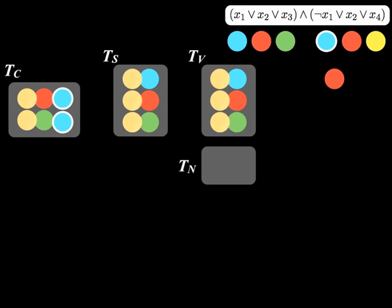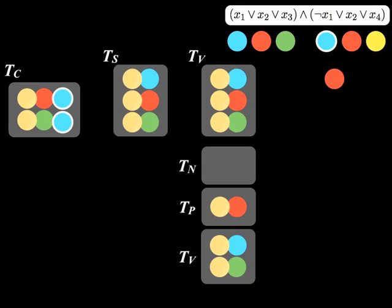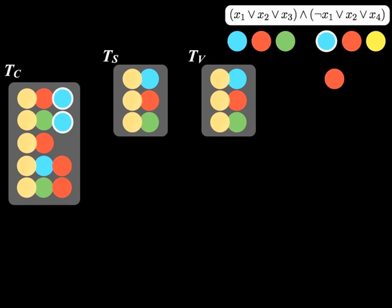Now we mix T sub P and T sub V into the tube T sub C to store witnesses for the current clause.